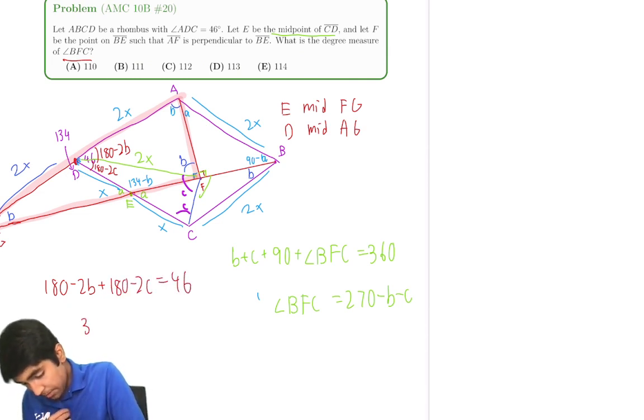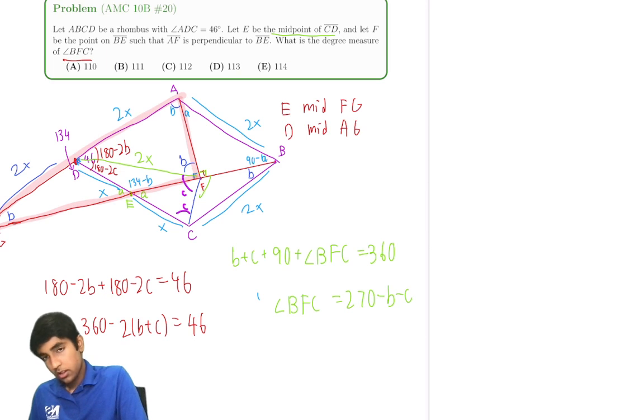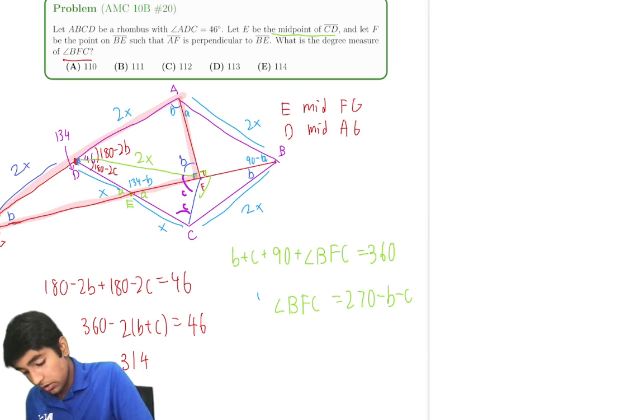So 180 minus 2B plus 180 minus 2C is 46. 360 minus 2 times (B plus C) is 46.